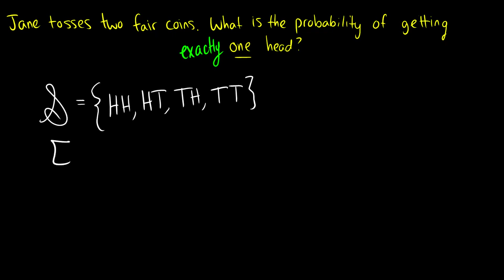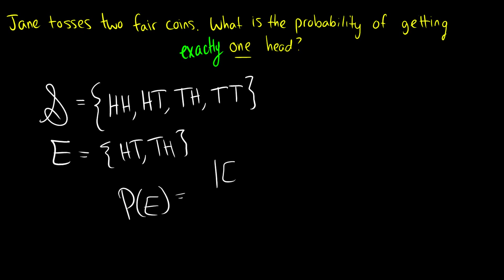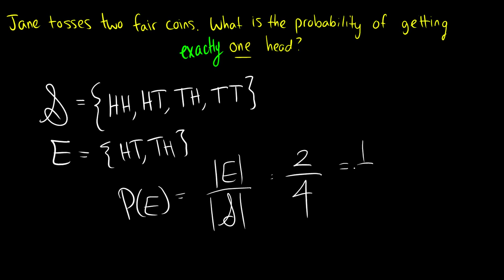Our event E is the case where she gets either a head and a tail, or a tail and a head. So the probability of that event happening is the number of elements in our event over the number of elements in our sample space. This is two divided by four, which is one half.